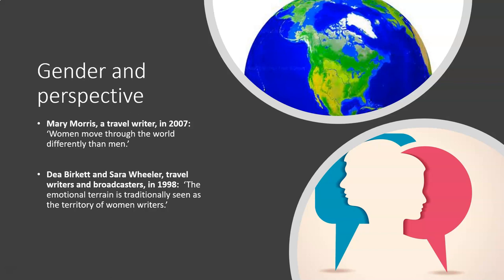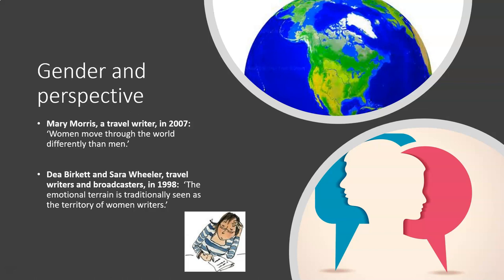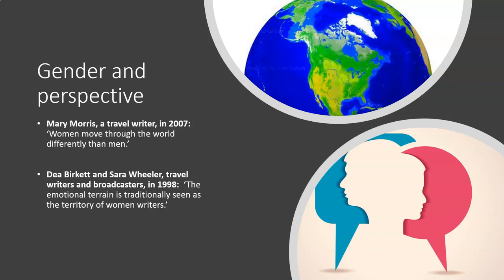Similarly, Dia Burkett and Sarah Wheeler, travel writers and broadcasters, said that 'the emotional terrain is traditionally seen as the territory of women writers.' You might disagree, and I'm sure many people would, but if we think about these two statements it is important to consider that gender is a factor we have to bring into our analysis, and when writing about a text it is important to think about the gender of the writer.